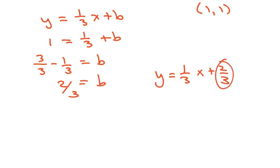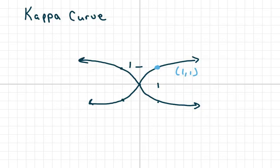So my y intercept is 2 thirds. That's the main thing. So 2 thirds would be about here. And if you draw that tangent line, it'd be right in there somewhere. And this is called the kappa curve.